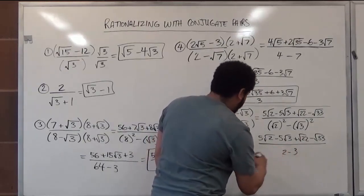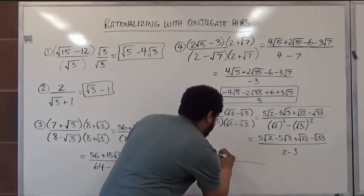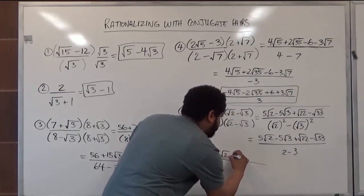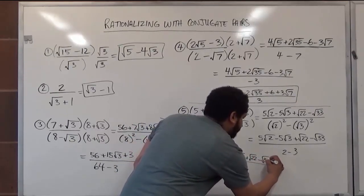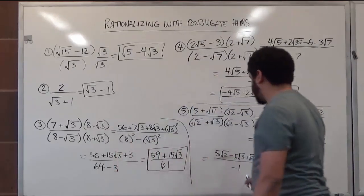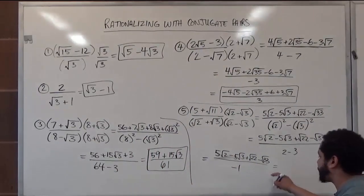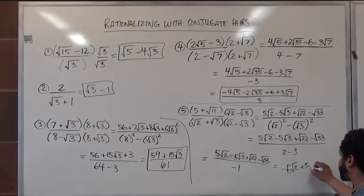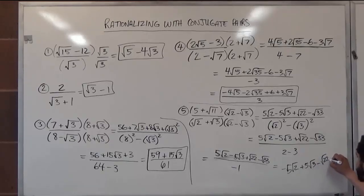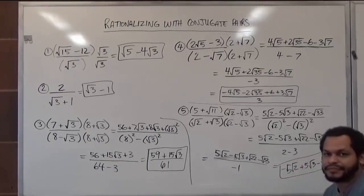Since the denominator becomes negative 1, we rewrite: 5 radical 2 minus 5 radical 3's plus radical 22 minus radical 33, divided by negative 1. Since this is a 1, we can just remove it and rewrite the solution without a denominator, changing all signs: negative 5 radical 2, positive 5 radical 3, negative radical 22, positive radical 33. And that's our solution for this video. Thank you.